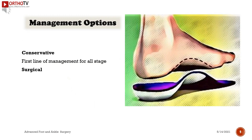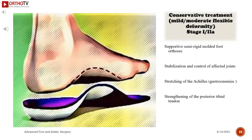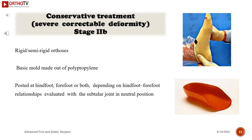Conservative management is the first line of treatment for all stages. For mild to moderate flexible deformity (stages 1 and 2a), treatment includes supportive semi-rigid molded foot orthoses, stabilization and control of affected joints, stretching of the Achilles and gastrocnemius, and strengthening of the posterior tibial tendon. For severe correctable deformity (stage 2b), rigid or semi-rigid orthoses — basic mold made of polypropylene posted at hindfoot, forefoot, or both — are used depending on hindfoot-forefoot relationships evaluated with the subtalar joint in neutral position.